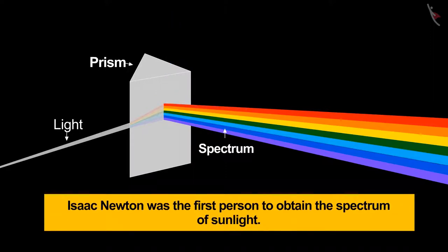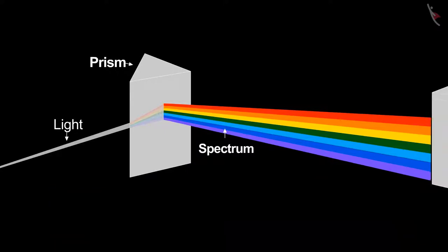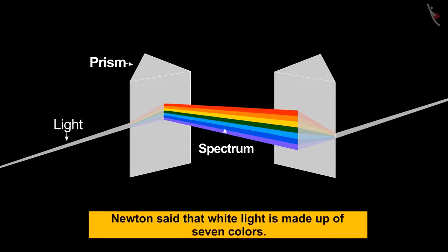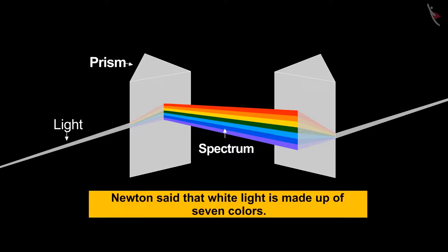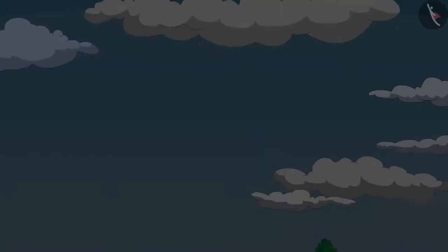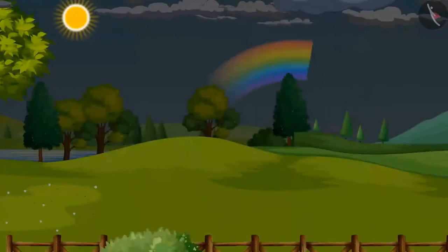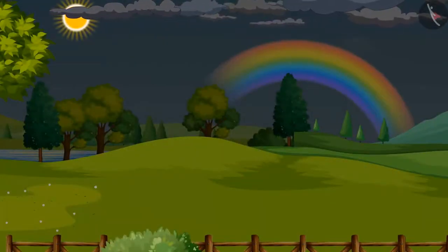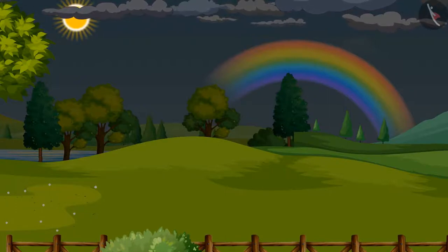Isaac Newton was the first person to obtain the spectrum of sunlight. He then used a second inverted prism to recombine the colors into a single beam of white light. Newton concluded that white light is made up of seven colors. So is the reason for the formation of a rainbow also the dispersion of white light coming from the Sun? Yes, it is.